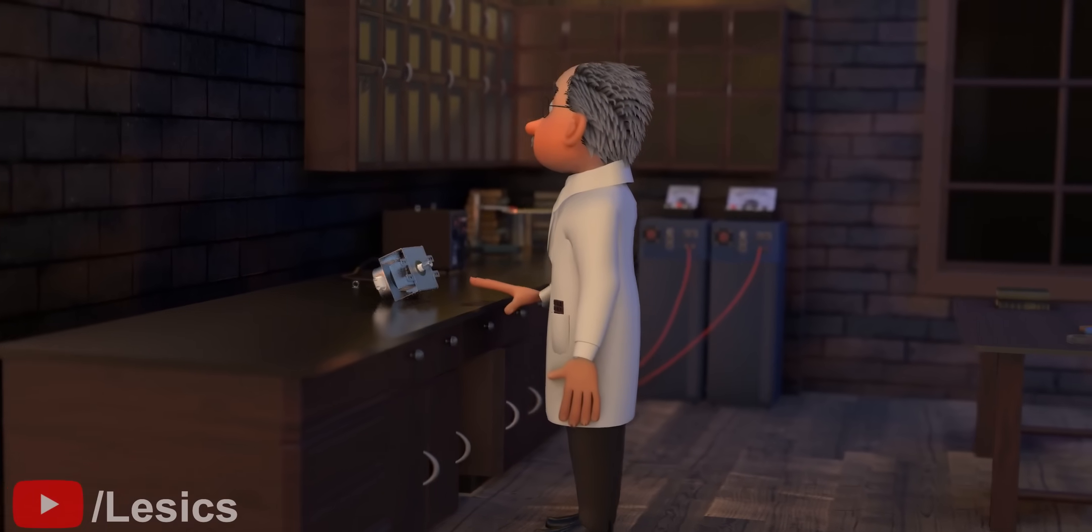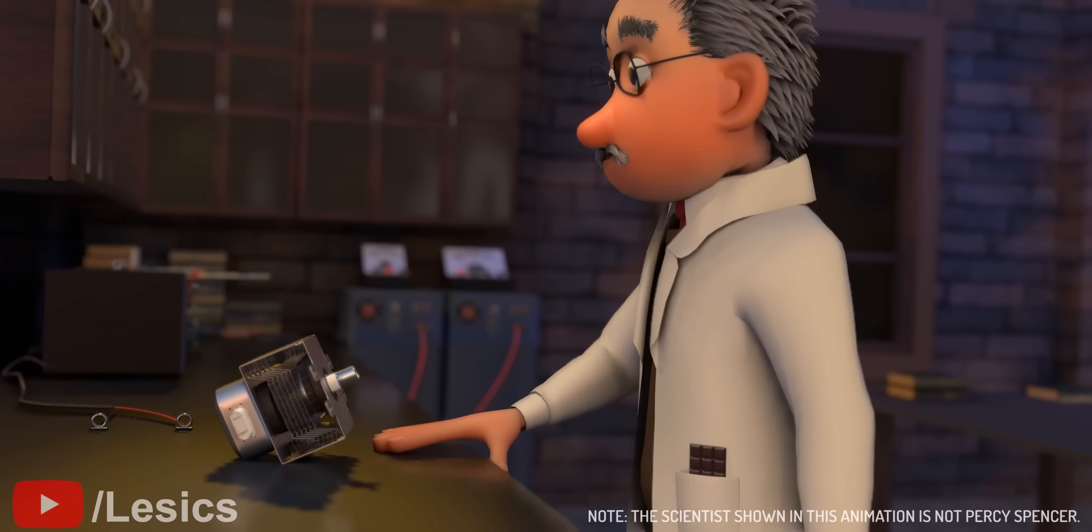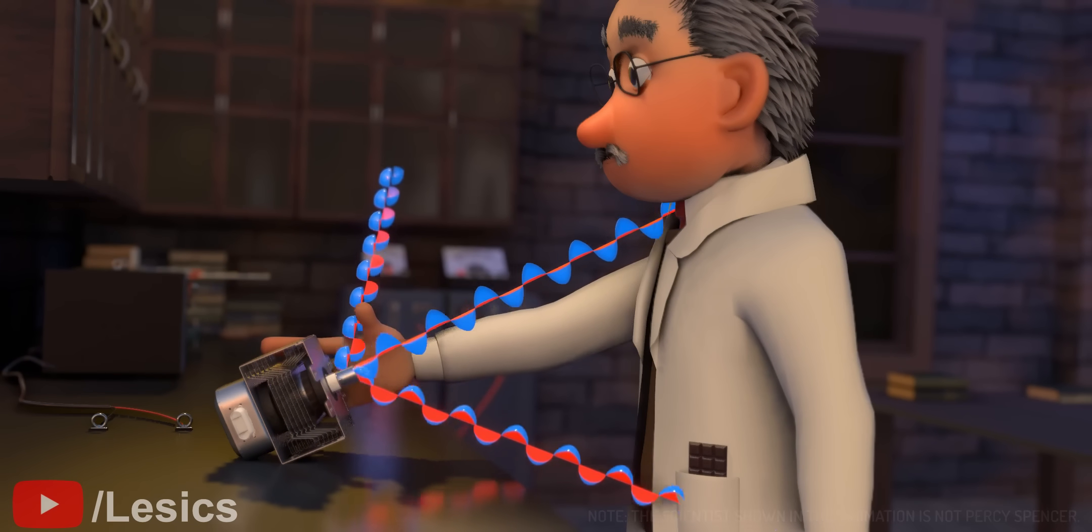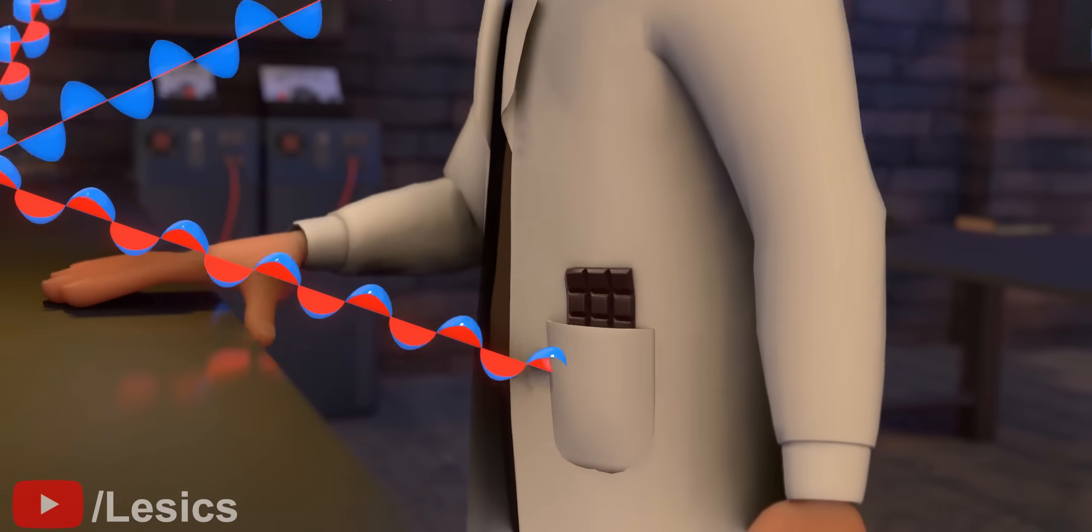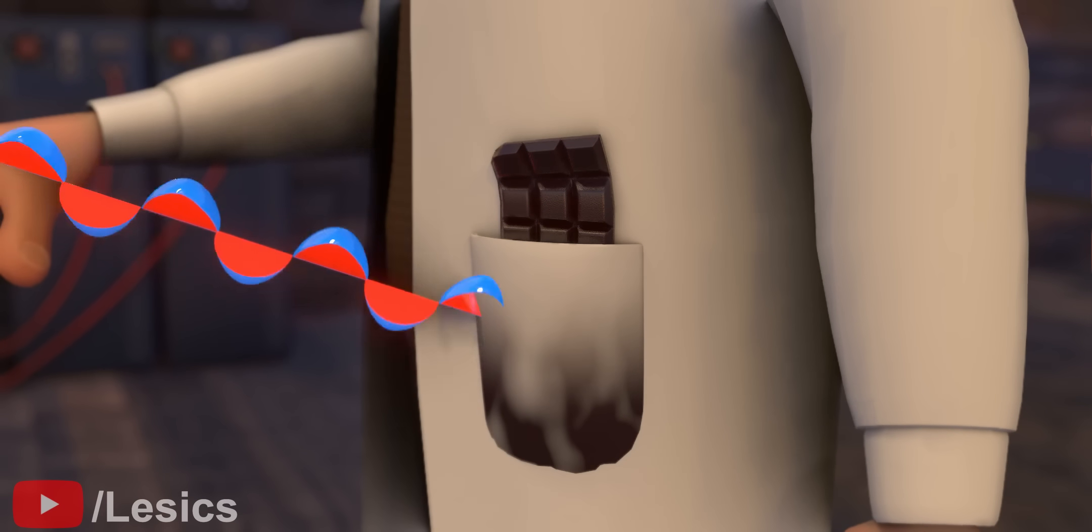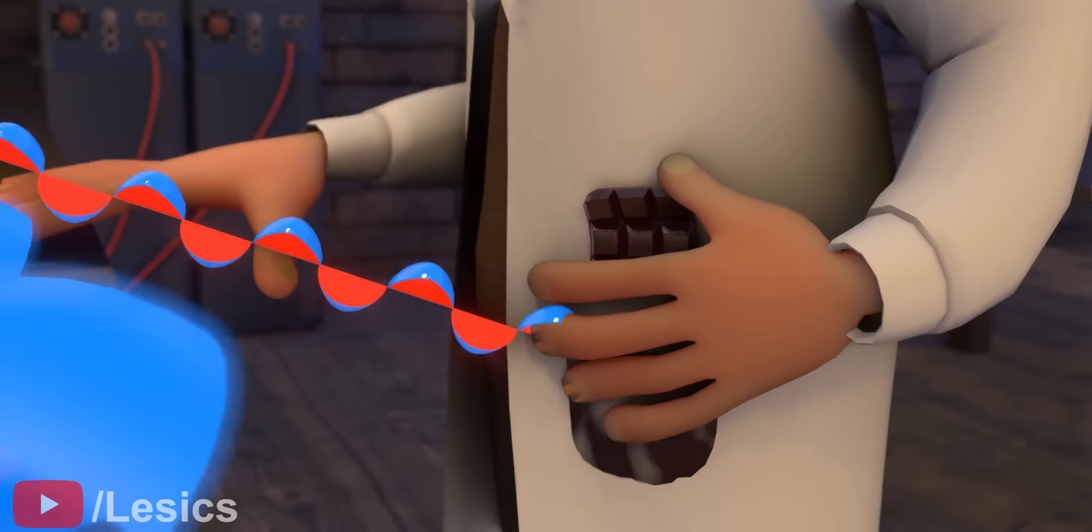It may amaze you to learn that the invention of the microwave oven was accidental. The scientist Percy Spencer was performing experiments on a device called a magnetron. Magnetrons generate powerful microwave radiation. During the experiment, he observed that the candy bar in his pocket was completely melted. That's when it occurred to him to explore the applications of microwaves in cooking food.